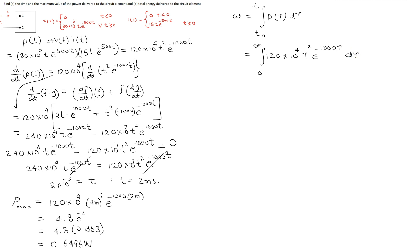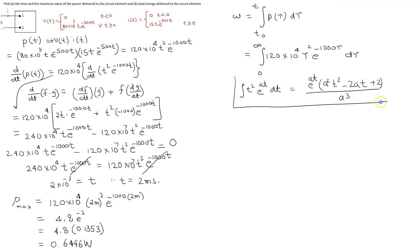If you have a programmable or graphics calculator or a suitable internet resource, you can solve this integration directly. For this video, I'm going to solve it by hand. In order to solve this, we need the identity: the integral of t squared e raised to the power at dt equals e raised to the power at, multiplied by a squared t squared minus 2at plus 2, divided by a cubed. We need this integration identity to solve the integration.